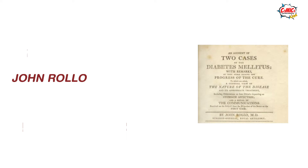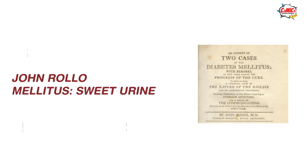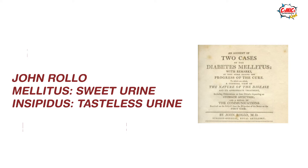Recognised for at least the past three millennia, the first complete description of the disease is attributed to Areteus the Cappadocian, who coined the term diabetes. The term mellitus was coined by the British Surgeon General John Rolo in 1798 to distinguish its sweet-tasting urine from the other type of diabetes, diabetes insipidus, where the urine was tasteless.